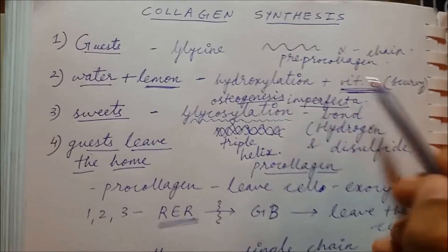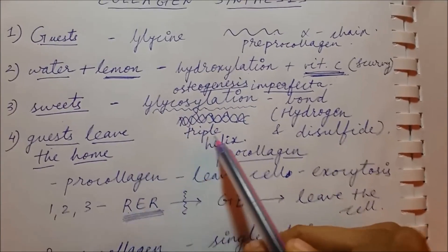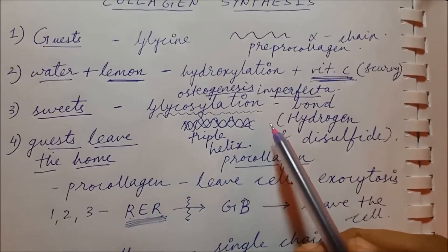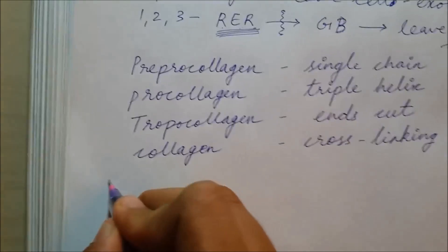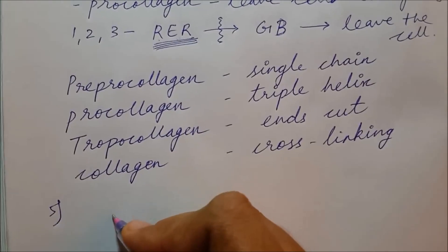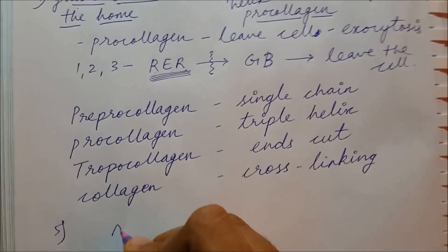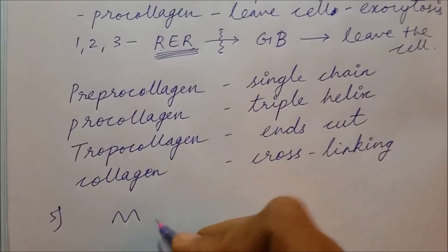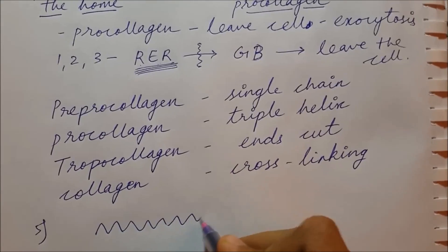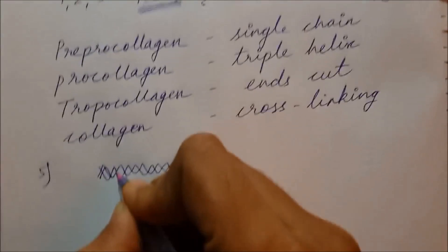To recap the high-yield points: vitamin C deficiency causes a problem with hydroxylation; in osteogenesis imperfecta there is a problem forming the triple helix due to defective glycosylation. The fifth step involves cutting the disulfide-rich terminal regions. The diagram in First Aid 2016 shows this nicely, so refer to that for a clear illustration.